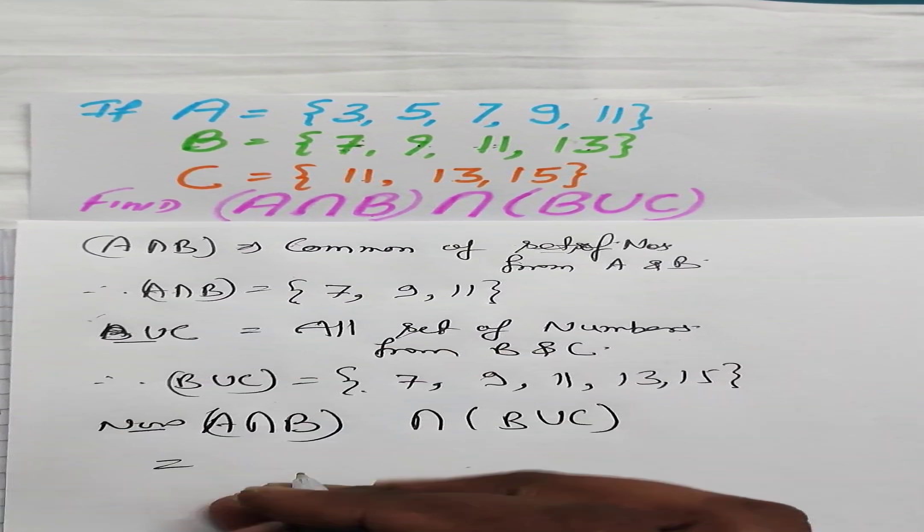A intersection B can be found as 7, 9, 11, because those numbers are the only numbers which are common in A and B.